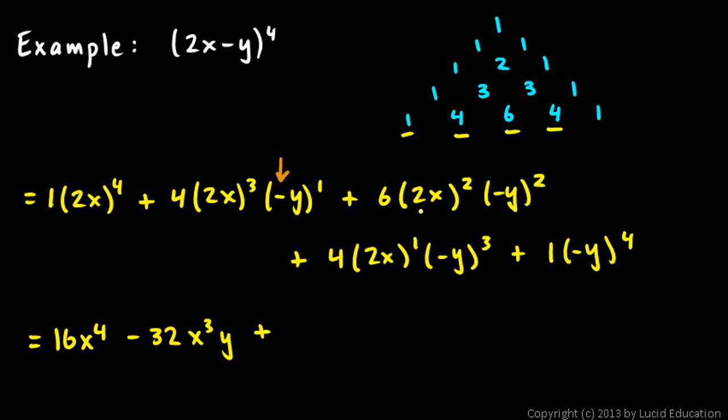And then plus, here 2 squared is 4 times 6 is 24. 24x squared. And then negative y squared is y squared. And the negative sign disappears when we square it. So this term remains positive.